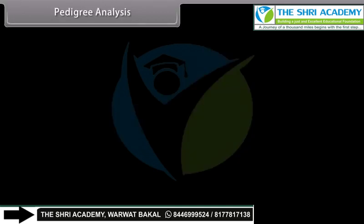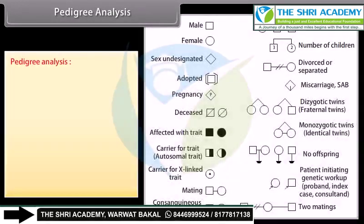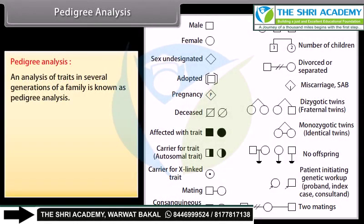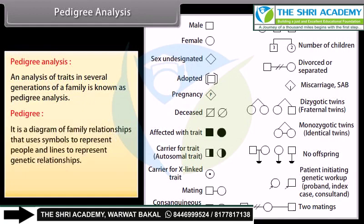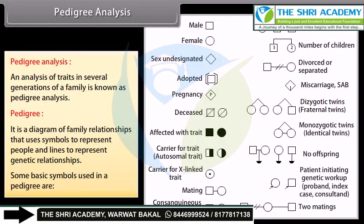Pedigree analysis: An analysis of traits in several generations of a family is known as pedigree analysis. A pedigree is a diagram of family relationships that uses symbols to represent people and lines to represent genetic relationships. Some basic symbols used in a pedigree are also shown.